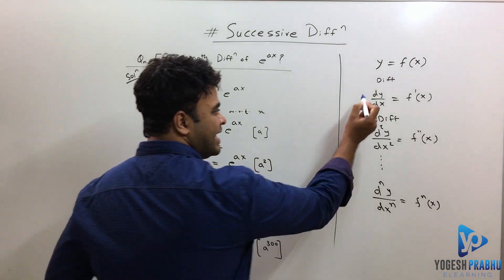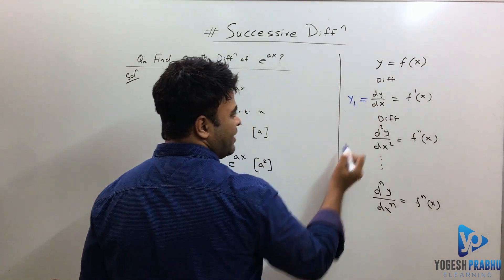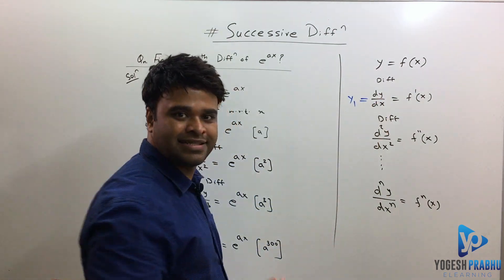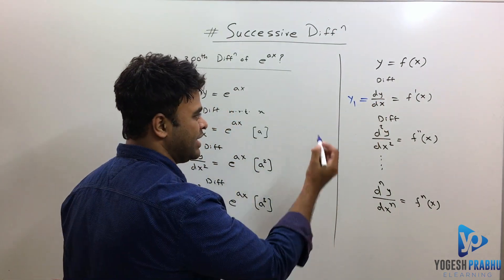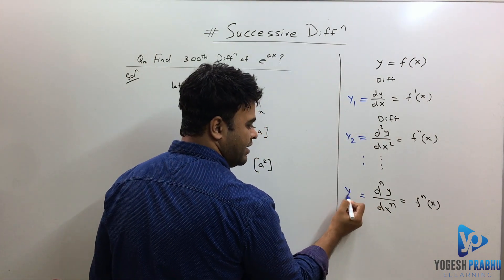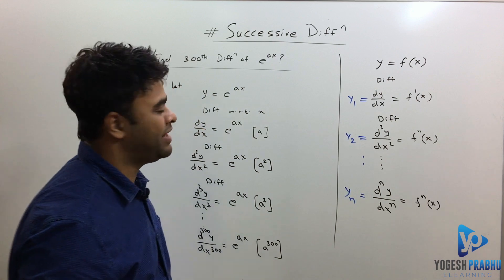That's the whole idea. And what we do usually is instead of writing it as dy/dx we simply write it as y₁. Now when you see y₁ it basically means dy/dx. It just saves some time writing this whole dy/dx again and again. So this has to be y₂, and same way this will be yₙ.